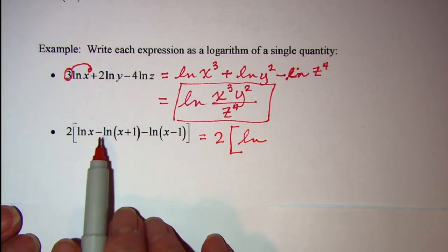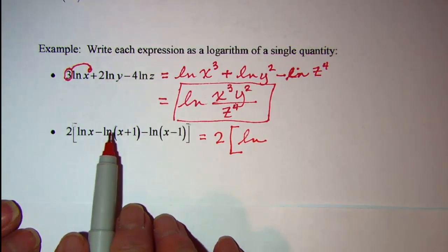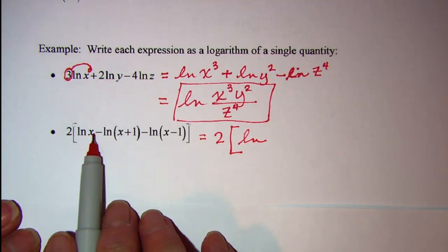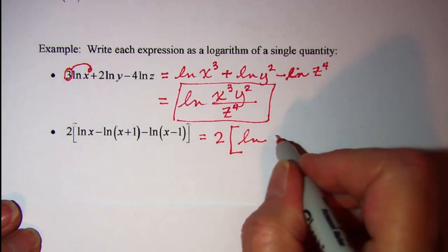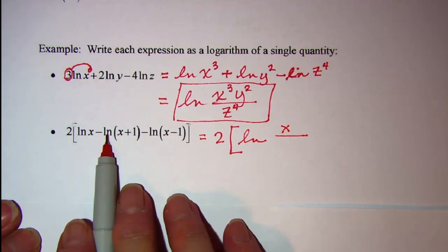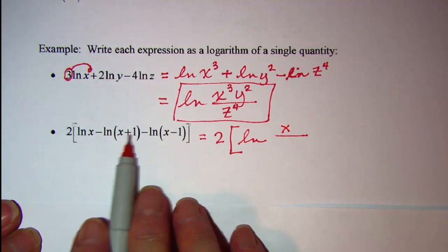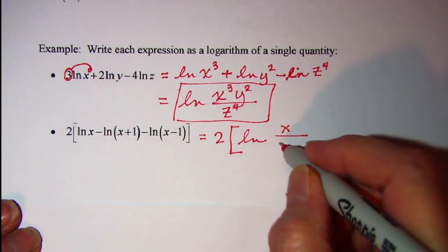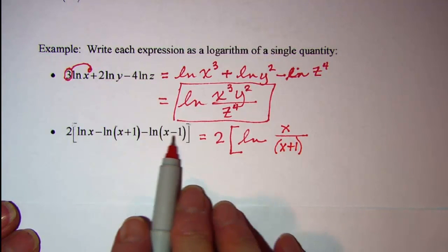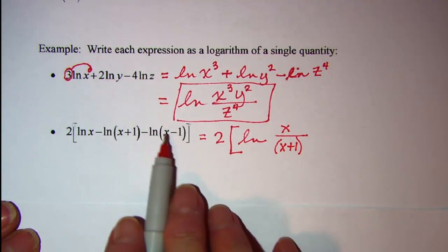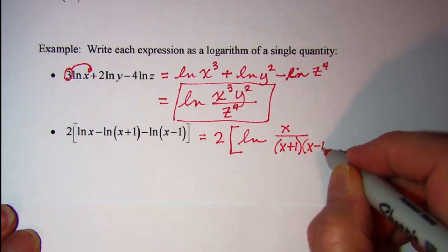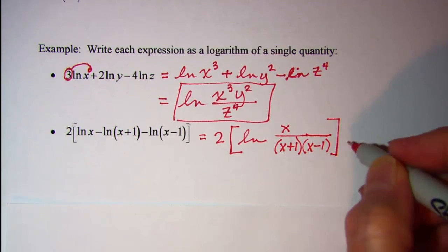And remember our properties, if we have addition, then we multiply the arguments. If we have subtraction, then we divide the arguments. So this argument will be in the numerator. Since this logarithm is, we have a minus there, then that argument is in the denominator. And then this logarithm also, we have a minus, so this argument is in the denominator as well.